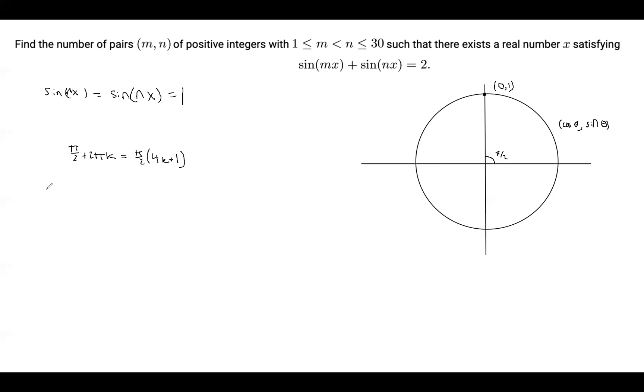So first we're going to assume that there is an x such that this thing holds. Then mx is of the form π/2 times (4a + 1) for some integer a, and nx = π/2 times (4b + 1) for some integer b. And we can divide mx by nx, and what we get is mx over nx, but the x's cancel out, so m/n = (4a + 1)/(4b + 1). So m times (4b + 1) = n times (4a + 1).